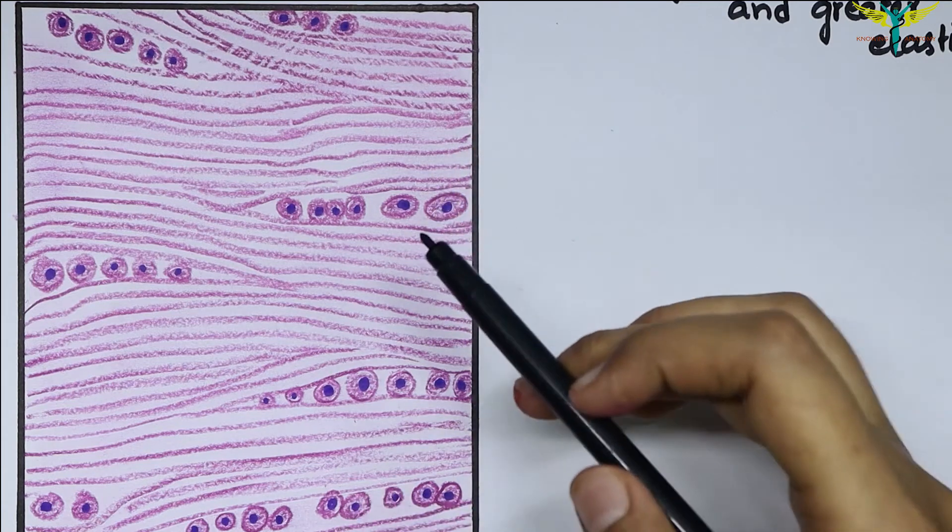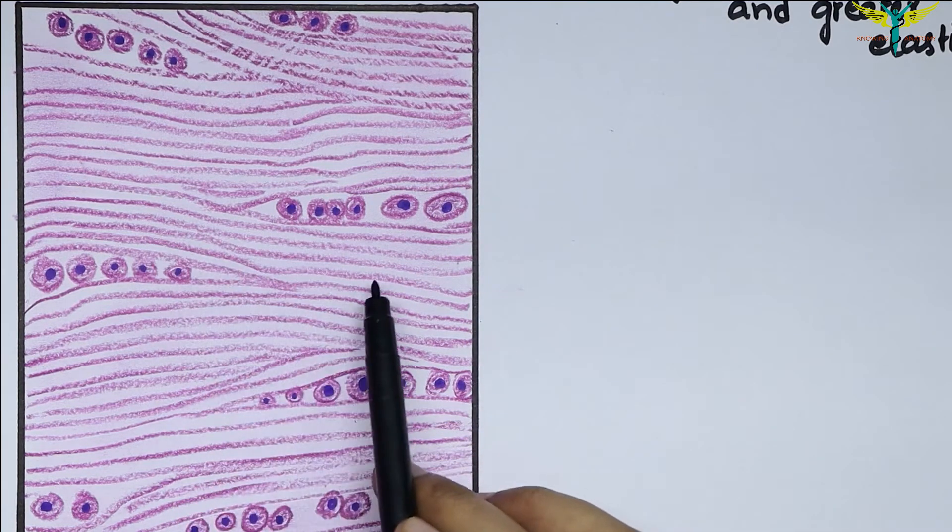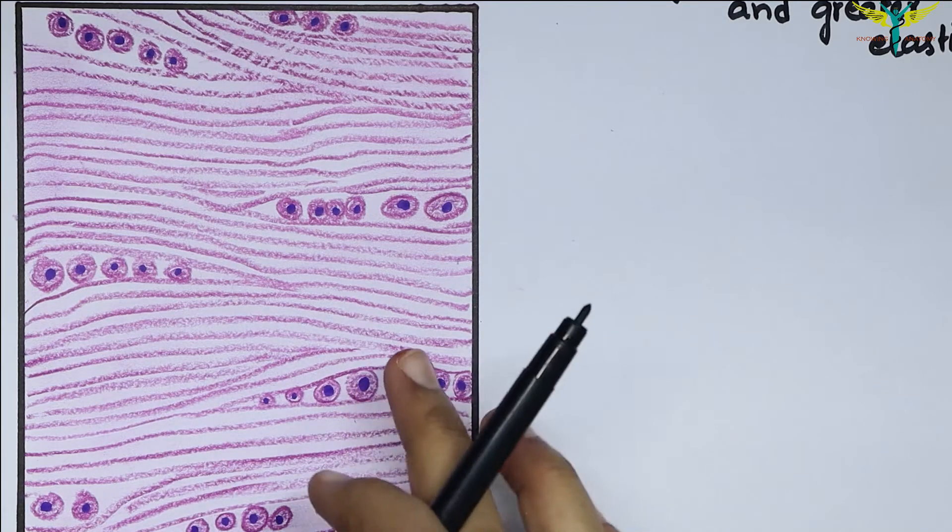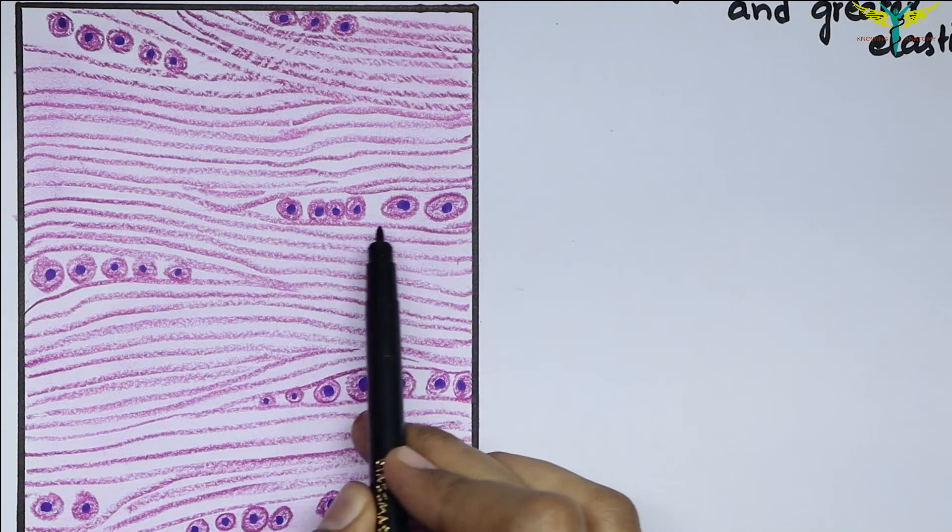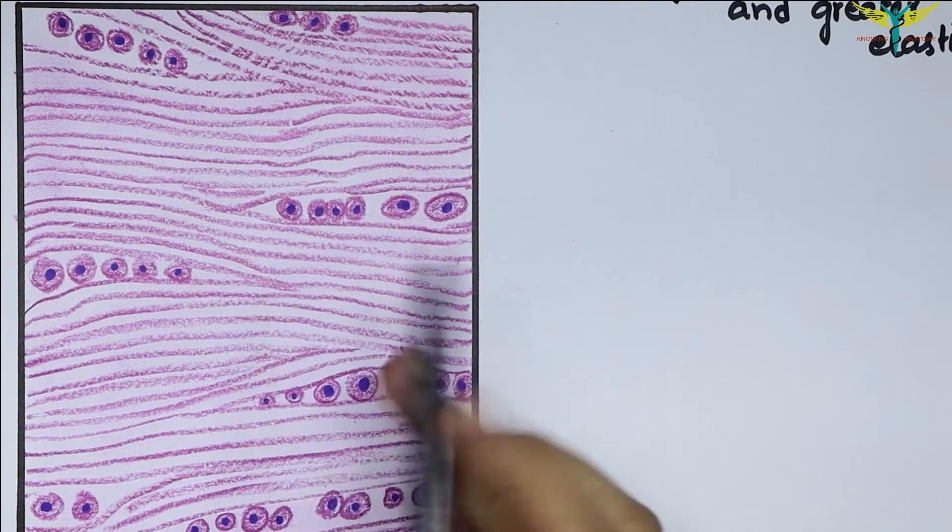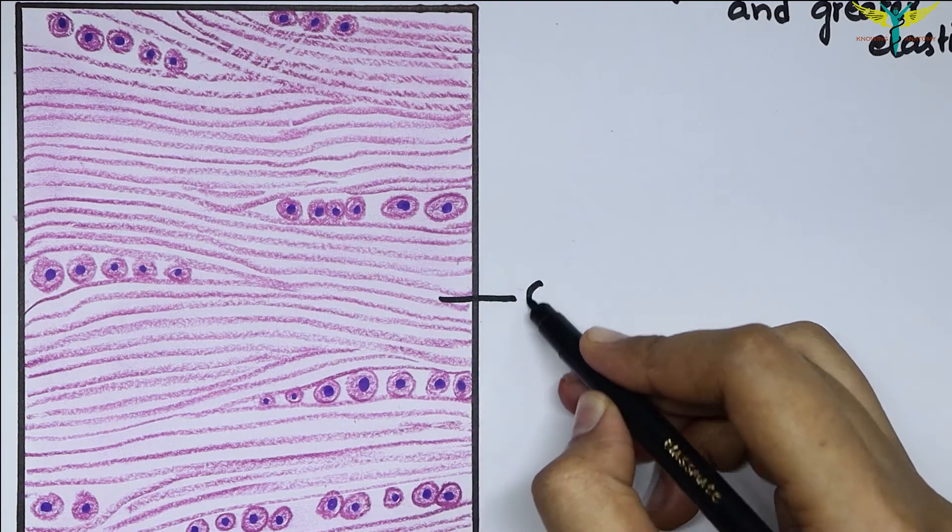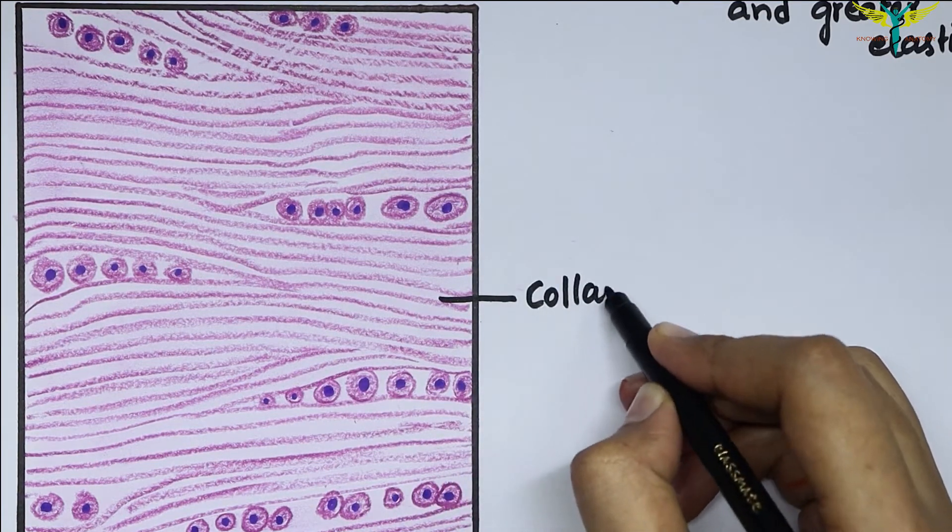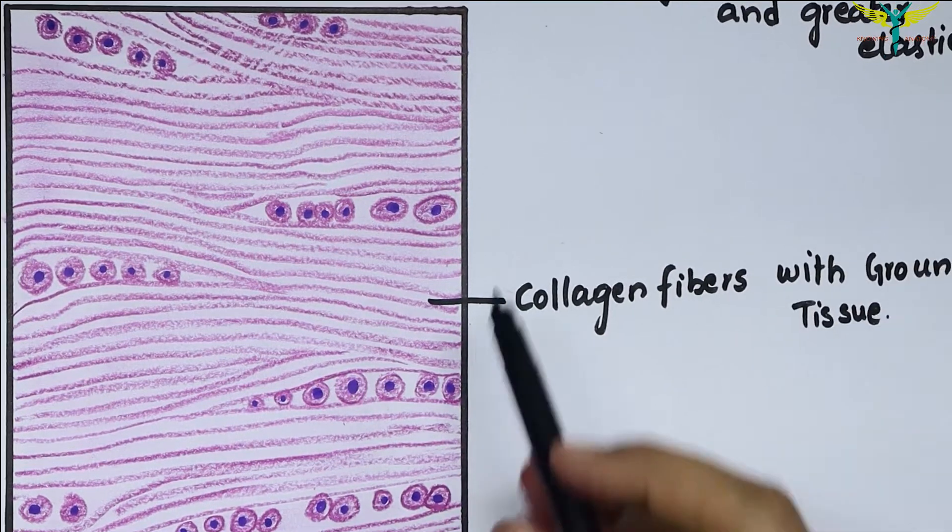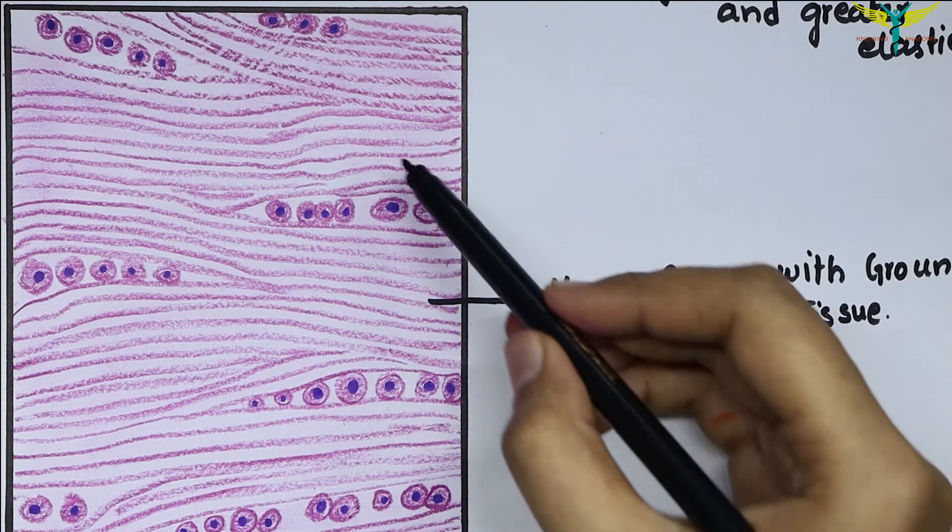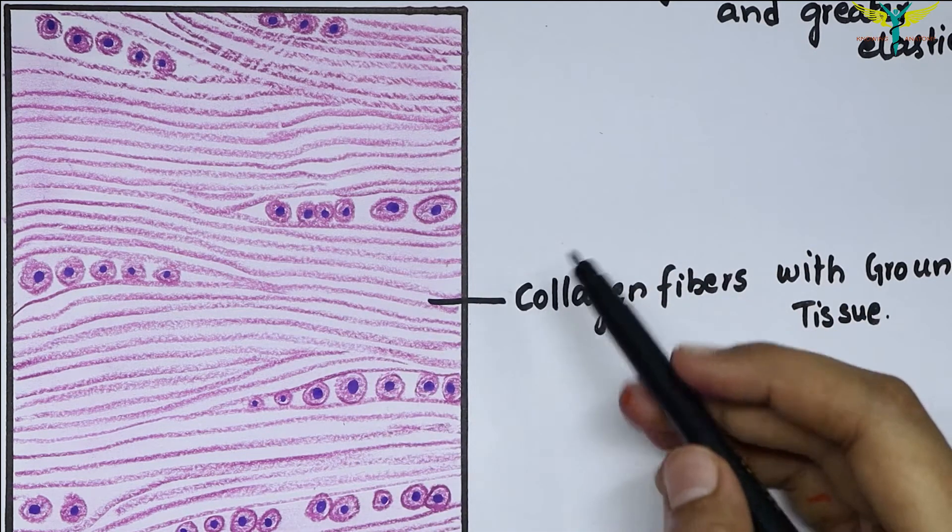fibrocartilage is characterized by the presence of prominent collagen fibers arranged in bundles with rows of chondrocytes. The chondrocytes intervene between the bundles of collagen fibers. These are the collagen fibers with ground tissue, and the chondrocytes lie in rows between all these bundles of collagen fibers.